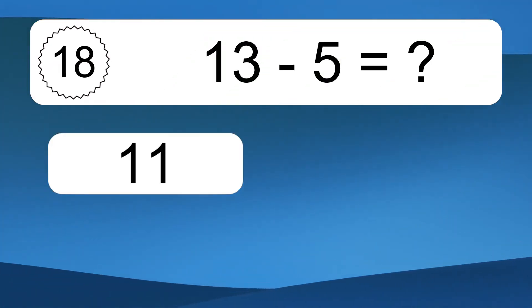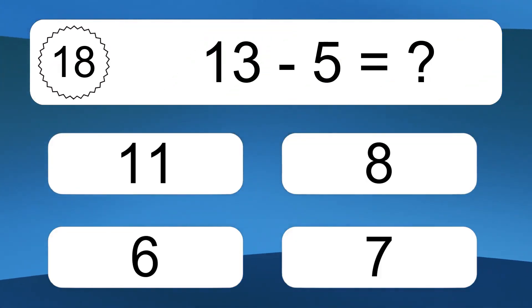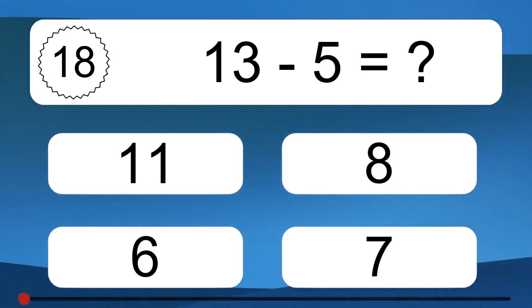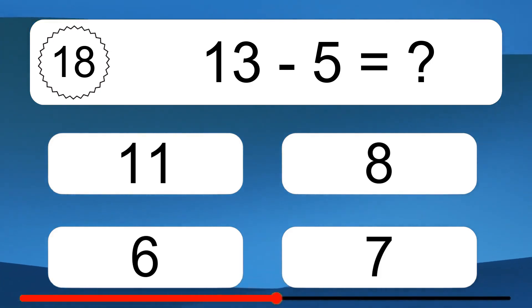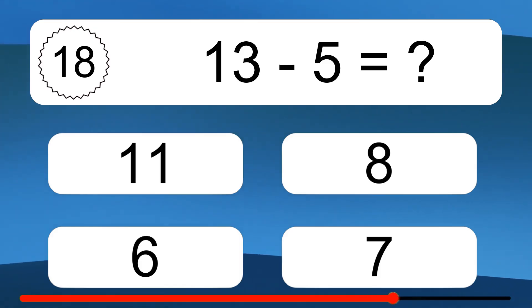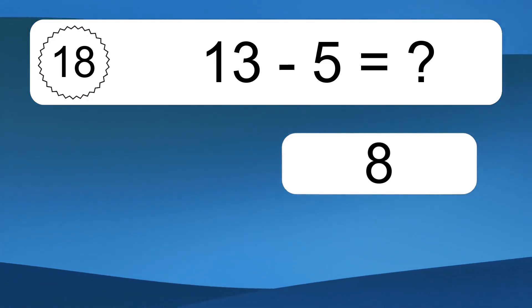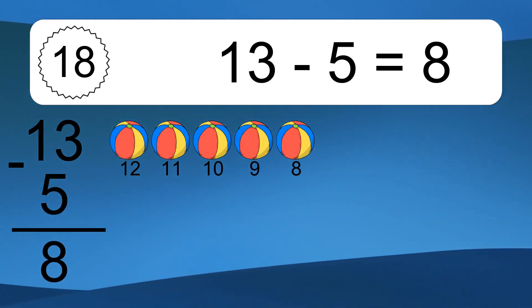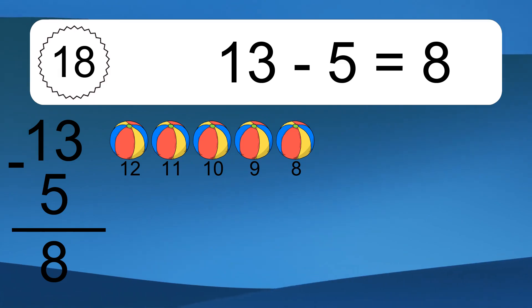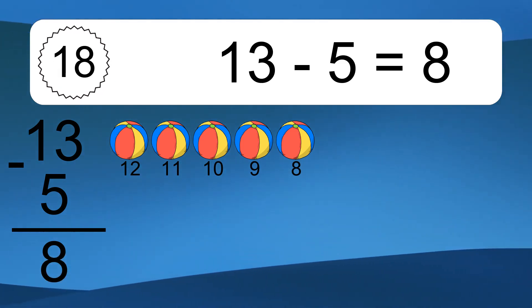13 minus 5 equals what? 13 minus 5 equals 8. Let's count it: 12, 11, 10, 9, 8.